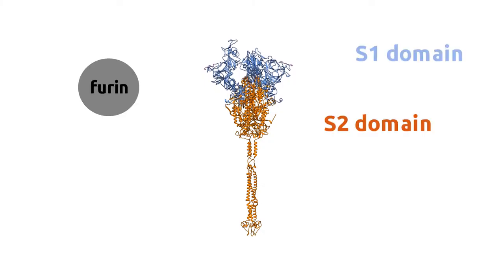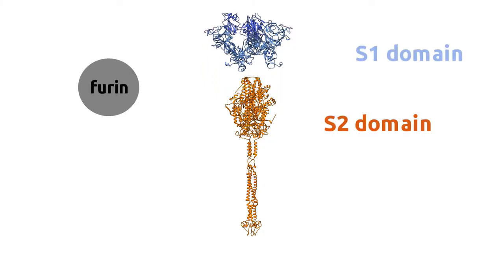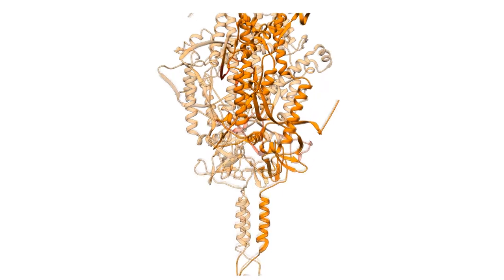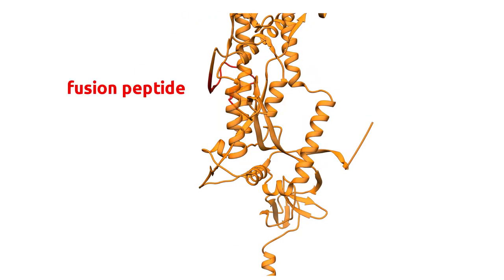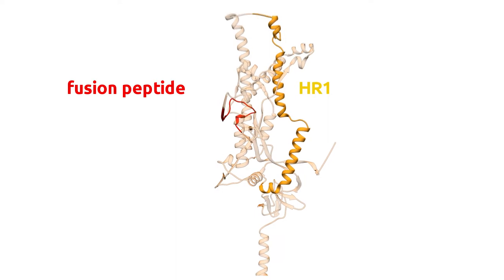As the S1-S2 site is situated at the junction between the S1-RBD and the S2-FB, the cleavage results in a dissociation of S1-RBD from the rest of the spike protein, forming a pre-fusion metastable state that will bind to the N-terminal of the ACE2 receptor.